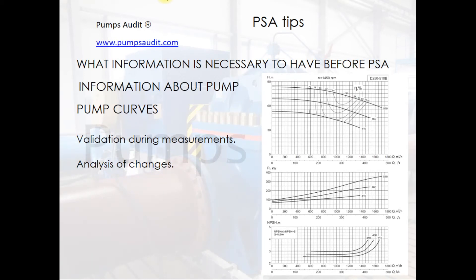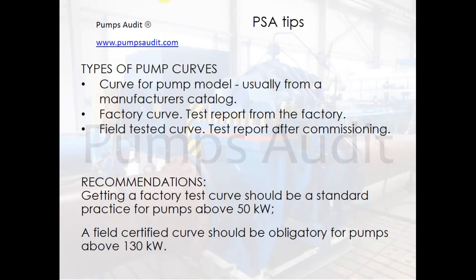During the analysis, superimposing a system curve will show the impact of making changes to the pump. The operating efficiency after a change will be dependent on the system the pump is attached to. There are at least three types of pump curves: curves from the catalog, test report from the factory, and test report after commissioning of the pump.